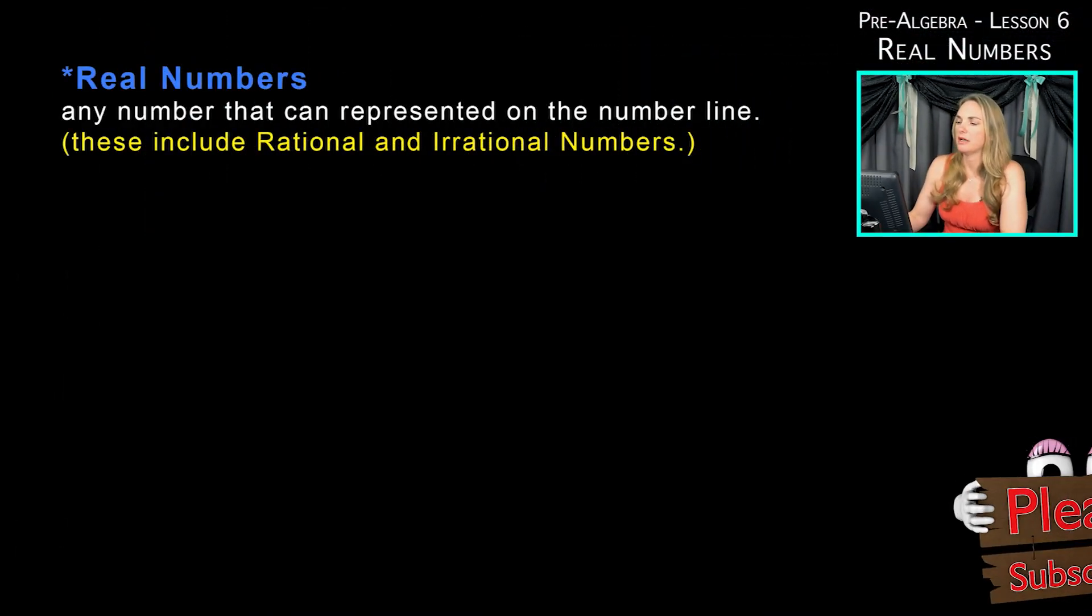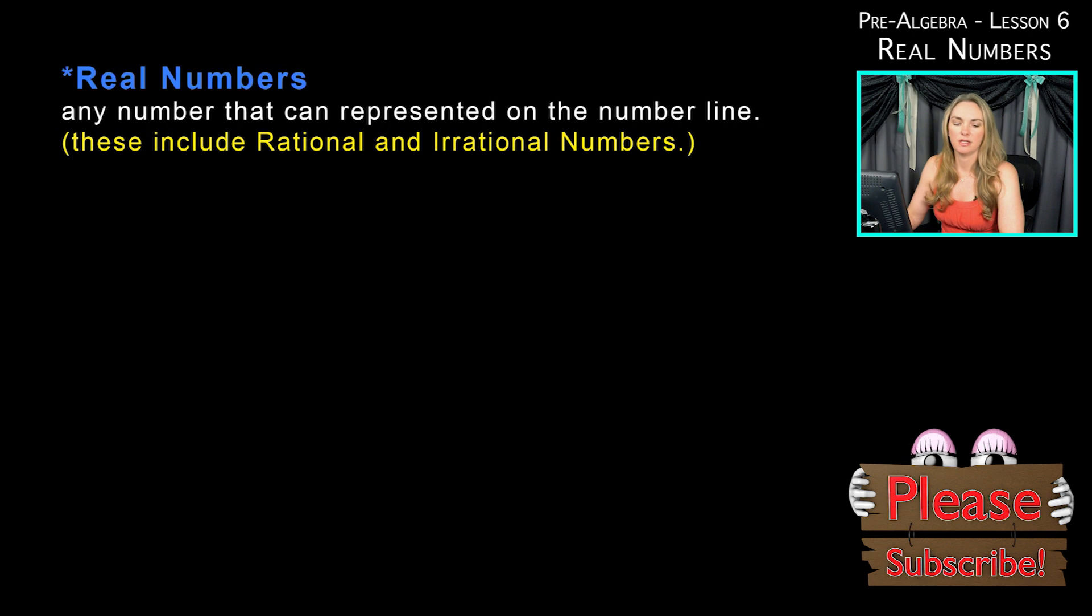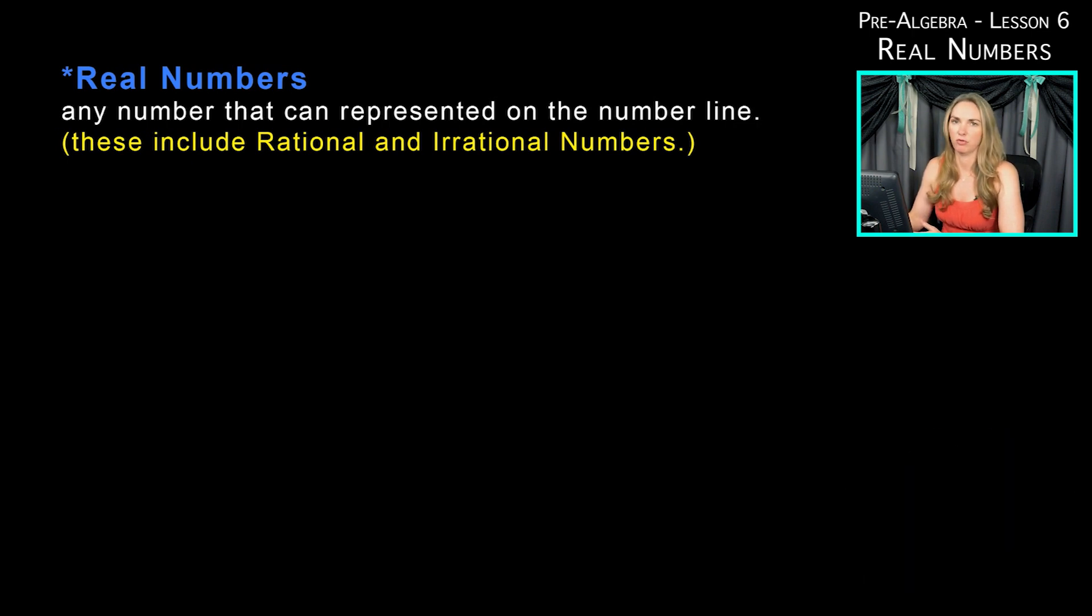Let's start with the definition of real numbers. A real number is any number that can be represented on the number line. Most of these are going to be any number you've ever seen before. If you recognize the number and it fits on a number line, it's a real number. These include rational and irrational numbers, which we're going to get to in a few minutes.